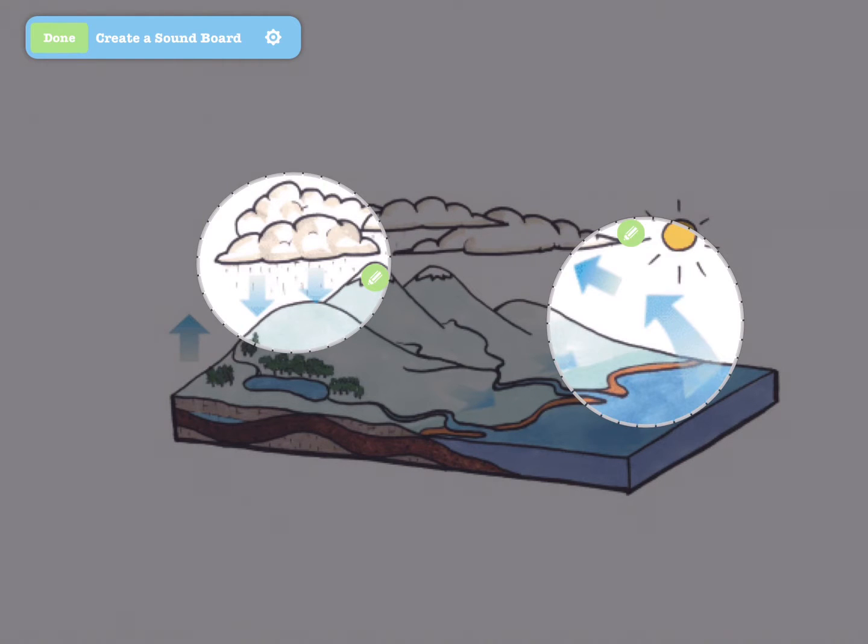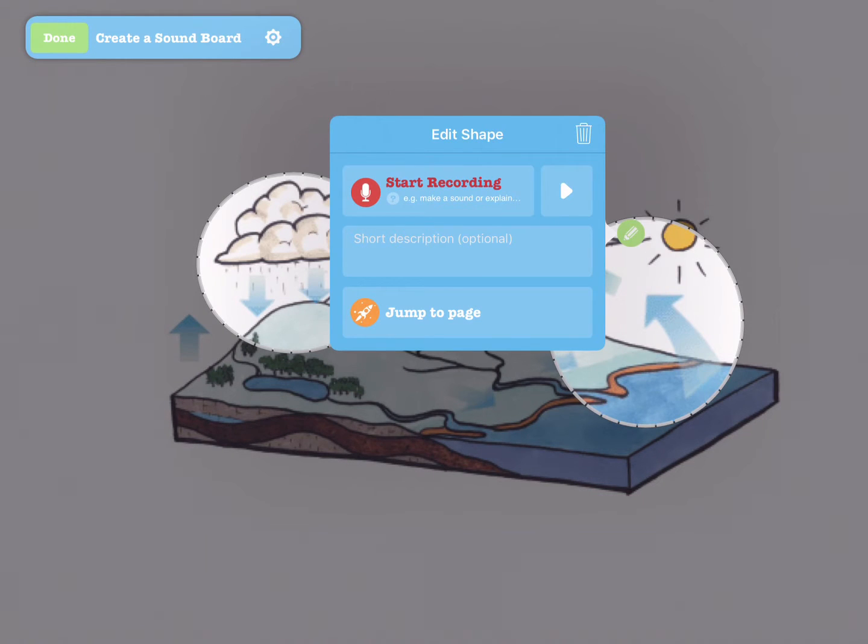You can add text bubbles to accompany your soundboard hotspots by tapping on that green pencil again, and then typing the text you wish to appear.